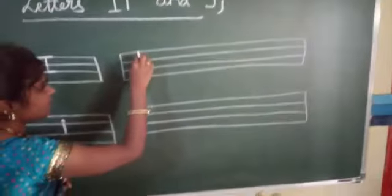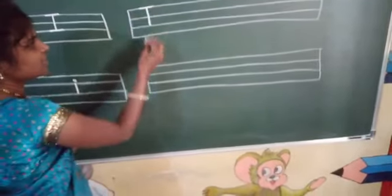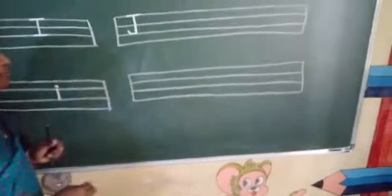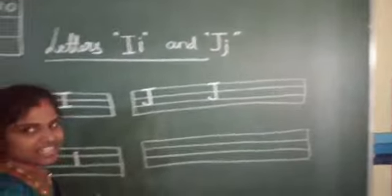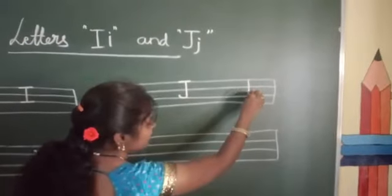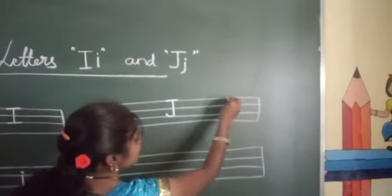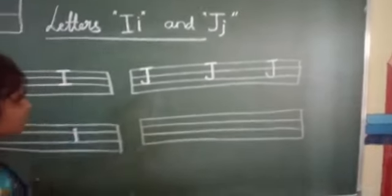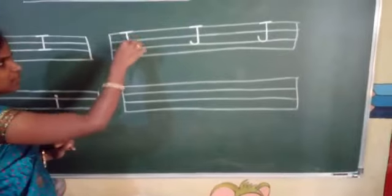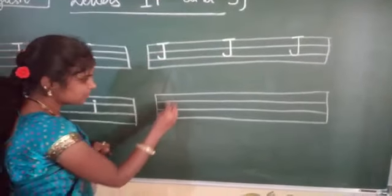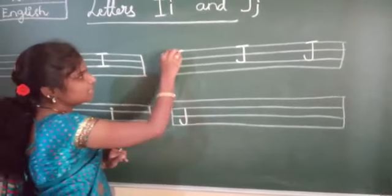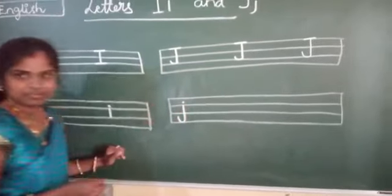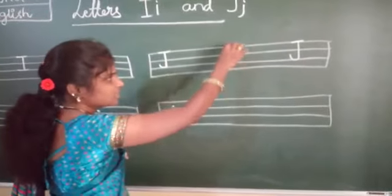Now letter J. First one standing line, then sleeping line. One standing line, next sleeping line. Letter capital J. Standing line, next one is sleeping line. Capital J.